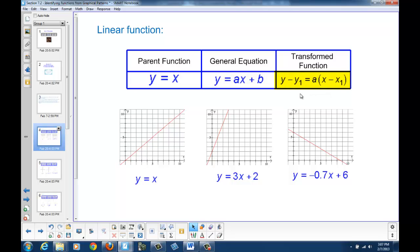And the transformed function, where we look at horizontal and vertical translations and additional dilations, looks like the point-slope formula that we're all familiar with, y minus y1 equals a times x minus x1. And here are various examples of our transformed function and what it can look like.